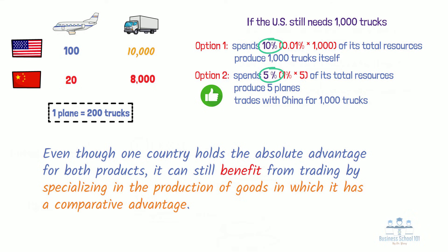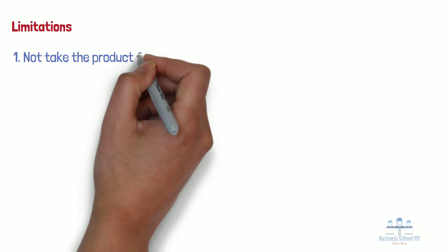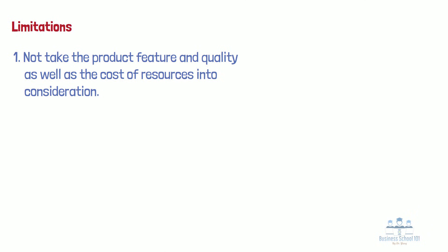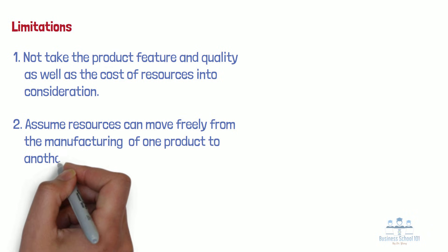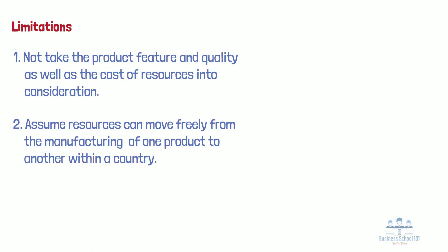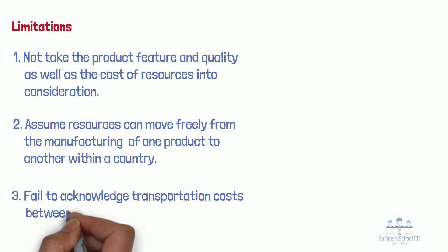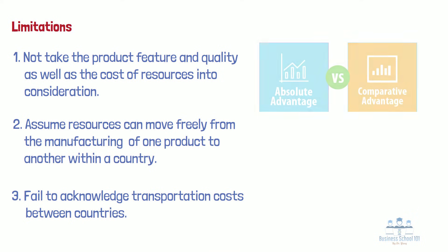In general, the absolute and comparative advantage theories help us immensely in understanding why countries should get involved in global trade. However, these theories also suffer many limitations. First, we have not taken product features, quality, or the cost of resources into consideration — for example, 1% of American resources might cost a different amount than 1% of China's resources, and trucks made in the U.S. might have different features and quality than trucks made in China. Second, we have assumed that resources can move freely from the manufacturing of one product to another within a country, which is not always the case, especially during unusual periods such as a trade war or a global pandemic. Third, we have failed to acknowledge transportation costs between countries. Although these theories may have drawbacks, they are still valuable because they illustrate the fundamental logic of global trade.